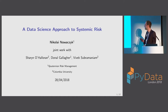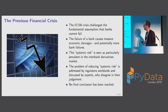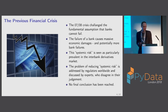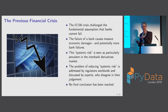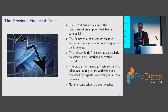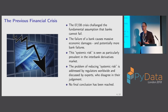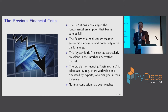Systemic risk is a topic usually mentioned in connection with the last financial crisis. The financial crisis in 2007-08 challenged a fundamental assumption of finance: that a triple-A rated bank cannot fail. A bank has failed and that caused massive economic damage. Systemic risk describes vaguely the risk of a chain reaction of bank failures that could theoretically wipe out the entire financial system.